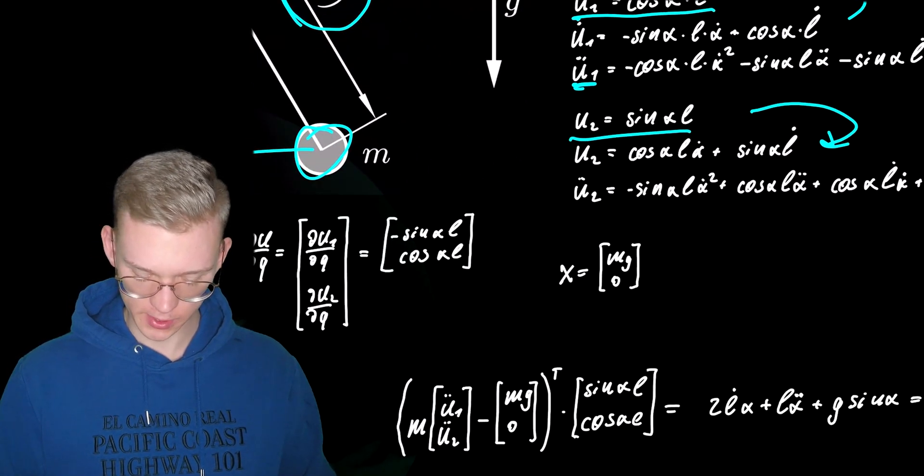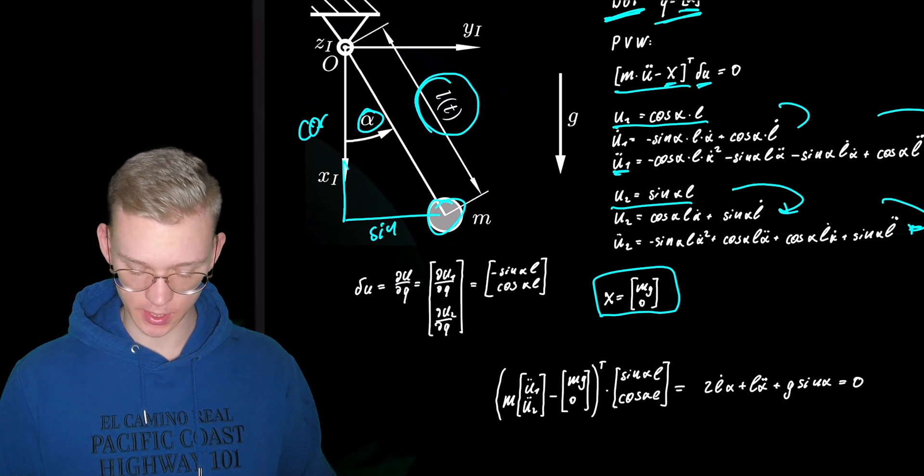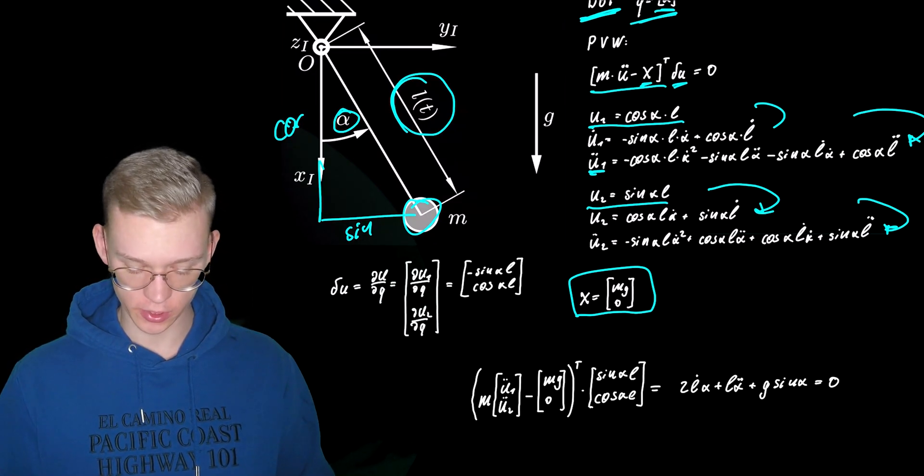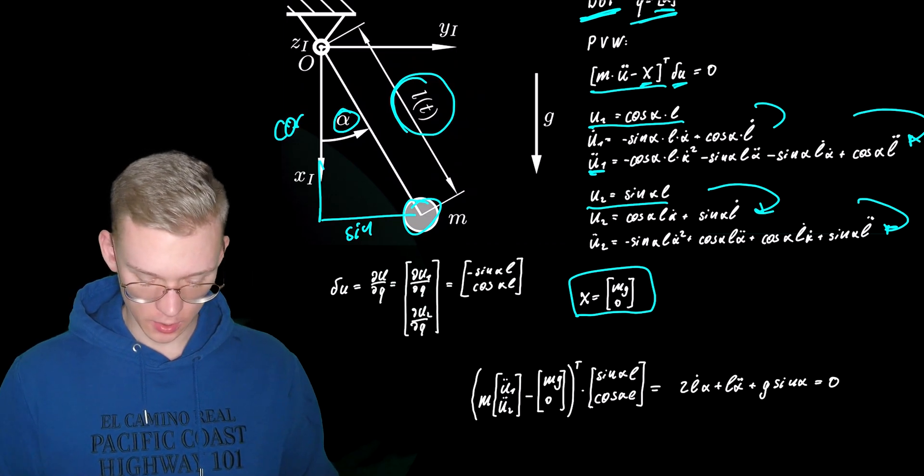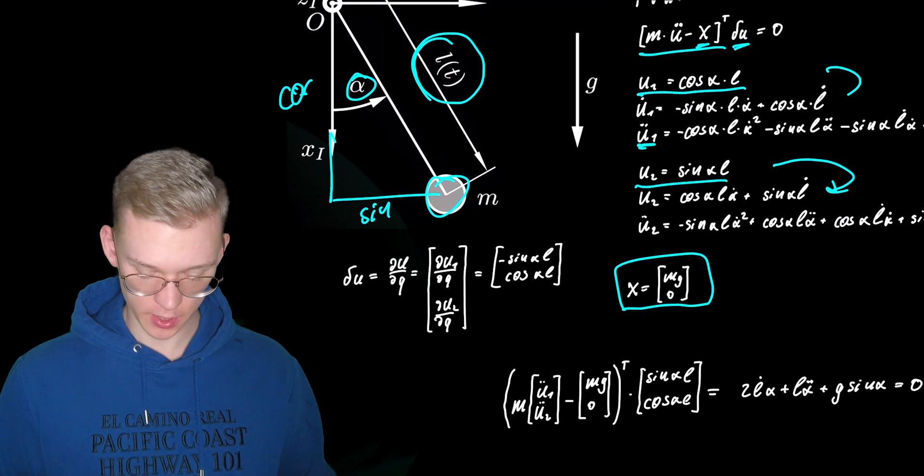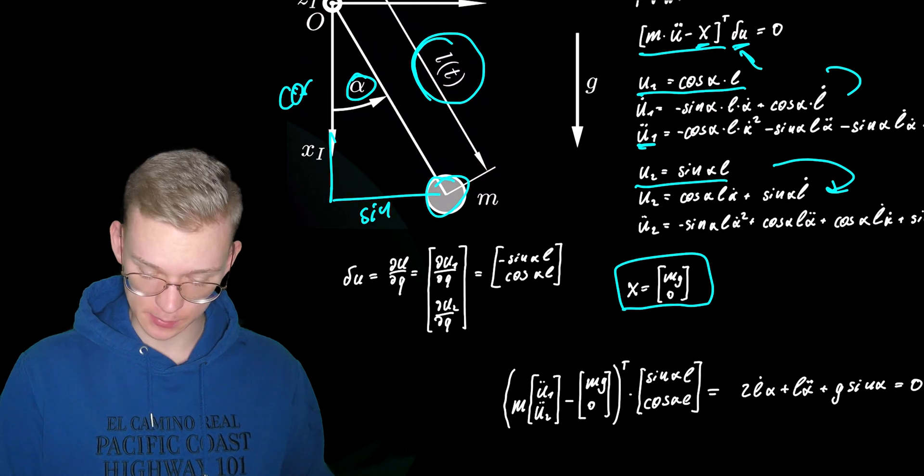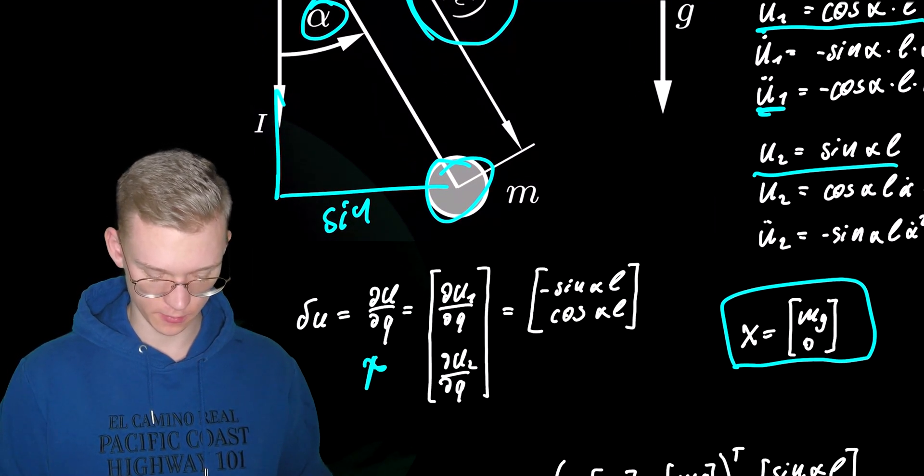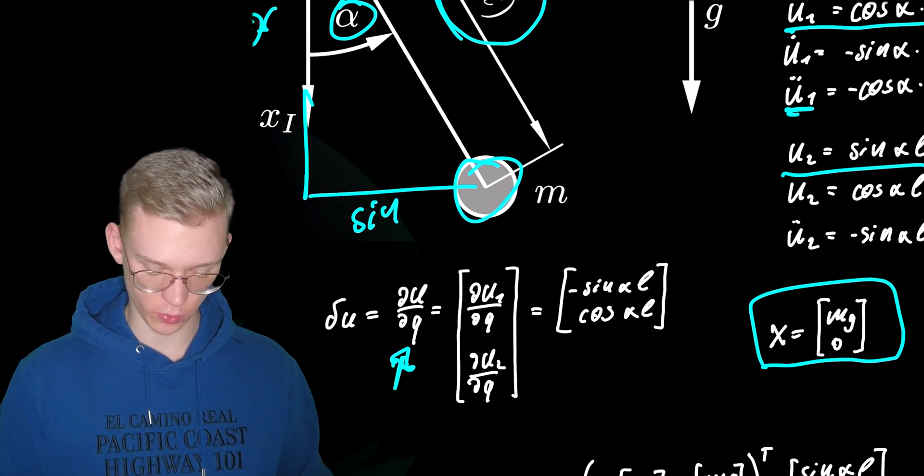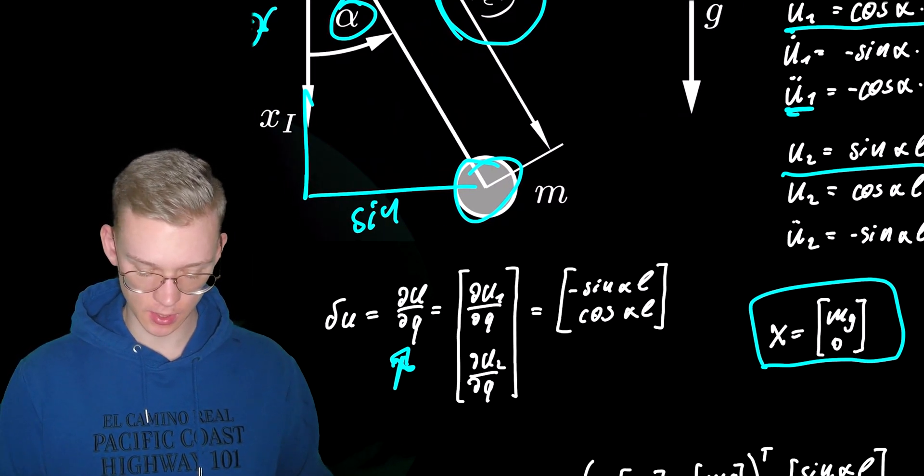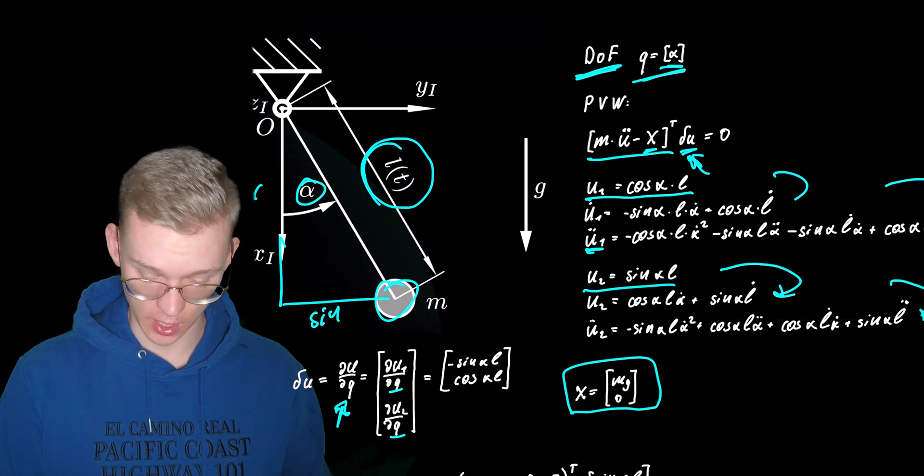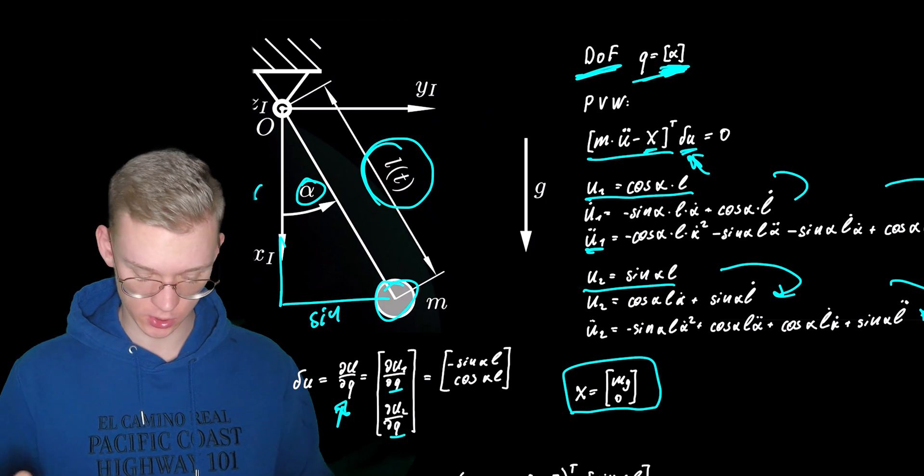So the forces that are acting on our body in this case is the same as in a simple pendulum, we just have the force of gravity. So what we are left with is to find the virtual displacements and the virtual displacements are defined as u du dq. So we have to derive our positions with our q's and our q's in our case or our q singular is just alpha.